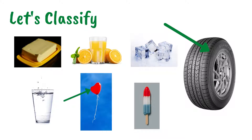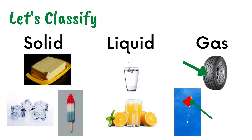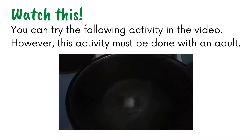Classify if the following objects are solid, liquid, or gas. Popsicle, butter, and ice cubes are solids. Water and orange juice are liquids. The air inside the balloon and the tire are gases.